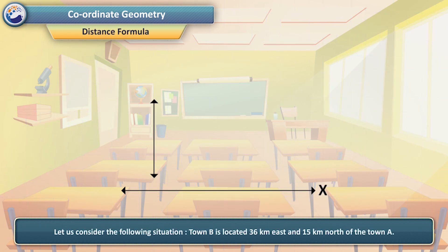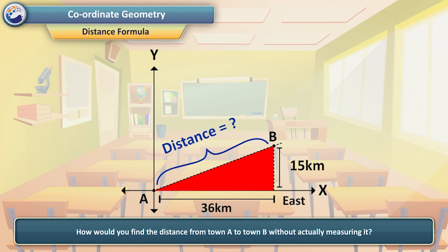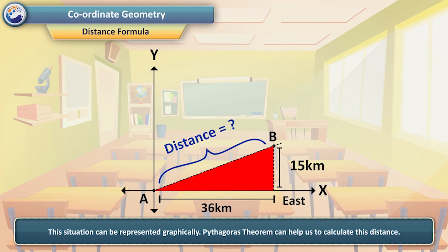Distance Formula. Let us consider the following situation. Town B is located 36 km east and 15 km north of town A. How would you find the distance from town A to town B without actually measuring it? This situation can be represented graphically. Pythagoras theorem can help us to calculate this distance.